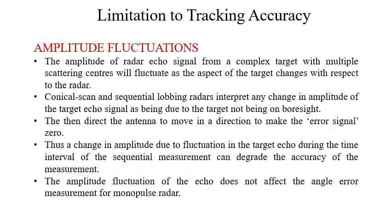Consider amplitude fluctuations. The amplitude of the radar echo signal from a complex target with multiple scattering centers will fluctuate as the aspect of the target changes with respect to the radar. Conical scan and sequential lobing radars interpret any change in amplitude of the target echo signal as being due to the target not being on axis, and direct the antenna to move to make the error signal zero. Thus, a change in amplitude due to target echo fluctuation during the time interval of the sequential measurement can degrade measurement accuracy. Amplitude fluctuations of the echo do not affect the angle error measurement for monopulse radar.